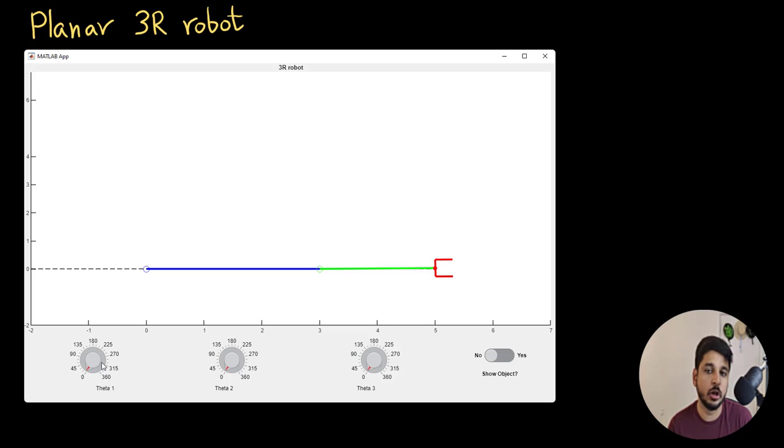And now I am going to increase theta1. So you can see that the robot revolves as theta1 is increased. Keep in mind that all the thetas are positive in the anticlockwise direction. Now I am going to revolve theta2 and similarly theta3.